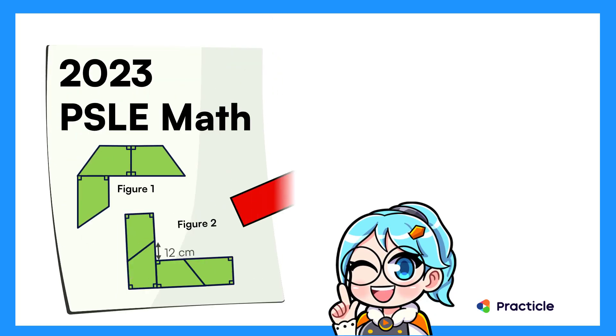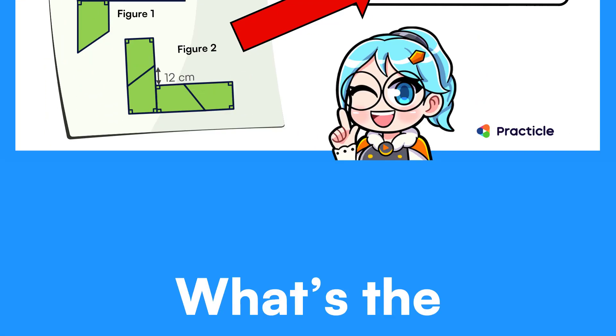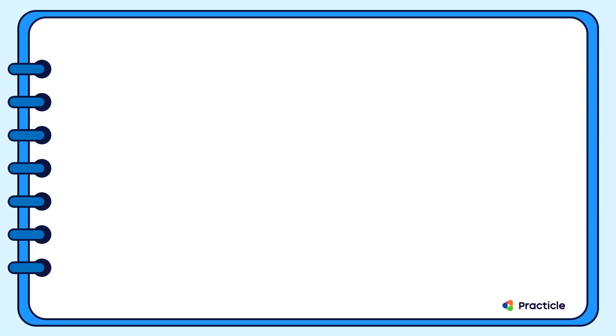Can you solve this 2023 math PSLE question on area and perimeter? Let's read this question together. The figure below shows a trapezium with a perimeter of 96 centimeters.